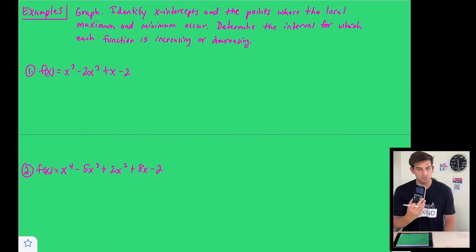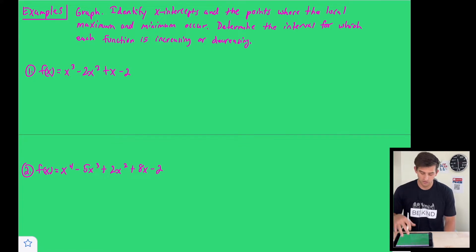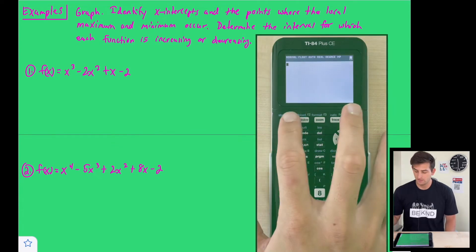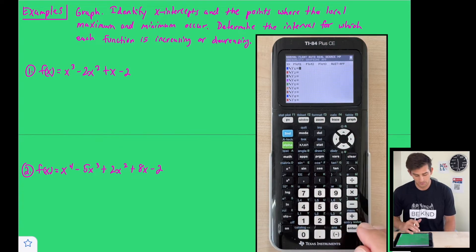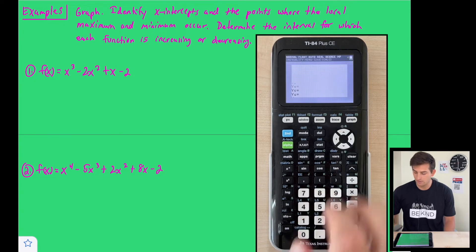We're going to use our TI-84 Plus CE graphing calculator to graph these functions and identify the turning points, x-intercepts, and local minimums and maximums. The examples ask us to graph each polynomial function, identify the x-intercepts and points where local maximum and minimum occur, and determine the intervals for which each function is increasing or decreasing. So on the calculator, go into y equals and type in the first function: x³ − 2x² + x − 2, then hit graph.